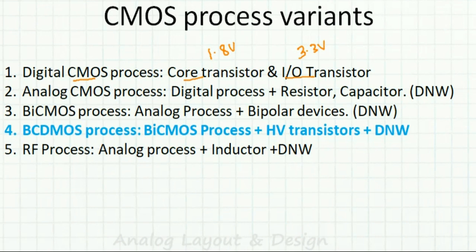Next we have the analog CMOS process. In the analog CMOS process, we have everything from the digital process, along with resistors, capacitors, and sometimes a deep N-well transistor. That is covered in a separate video.